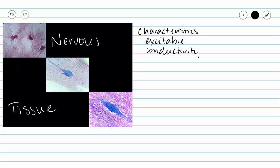And finally, going along with both the fact that this tissue is excitable and it can conduct electrical signals, we need to be able to get those electrical signals to the next cell. And so our nervous tissue exhibits the ability of secretion, which allows neurotransmitters to carry our signal to the next cell.